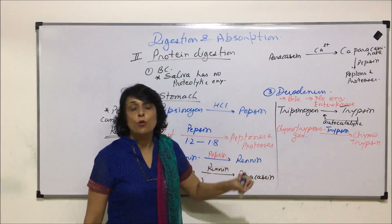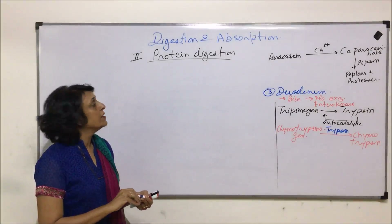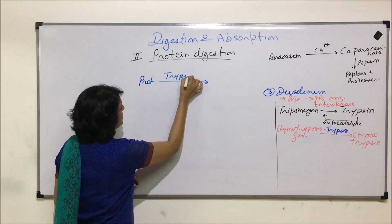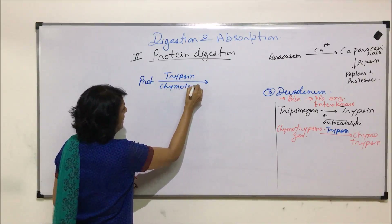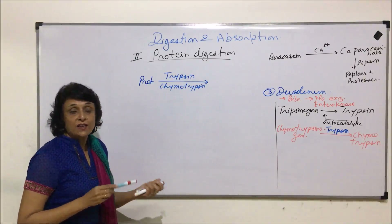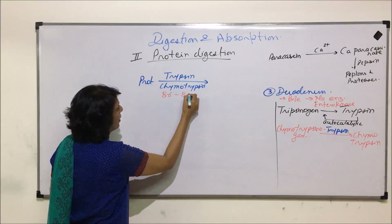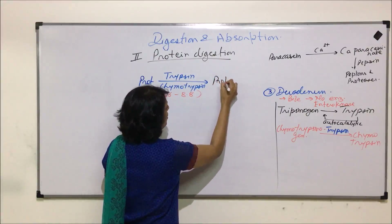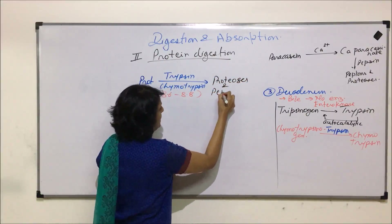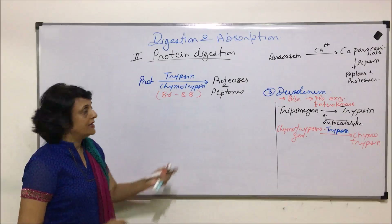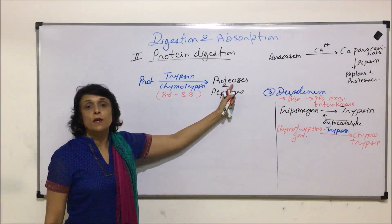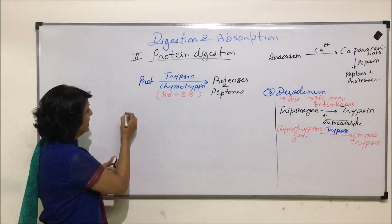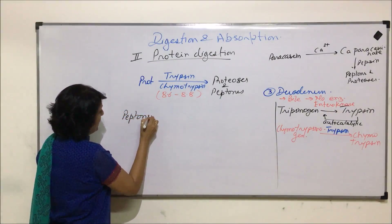The proteins entering the duodenum are acted upon by trypsin and chymotrypsin at a pH of around 8.6 to 8.8. These proteins are broken down into smaller molecules — proteoses and peptones, which are smaller polypeptides. So just as pepsin in the stomach produces these two substances, trypsin and chymotrypsin in the duodenum also yield proteoses and peptones.